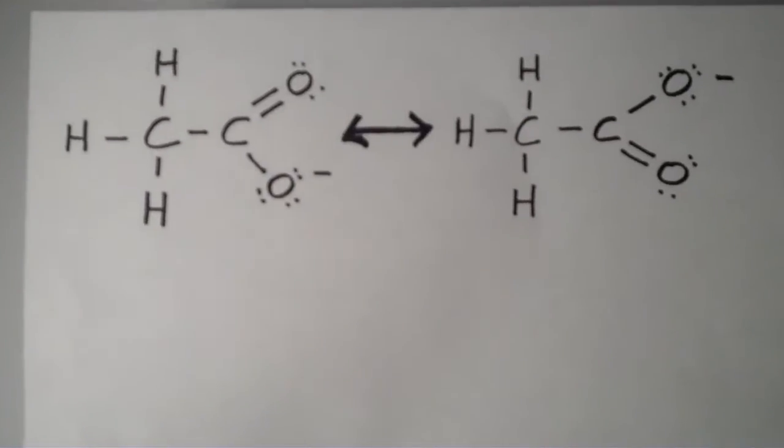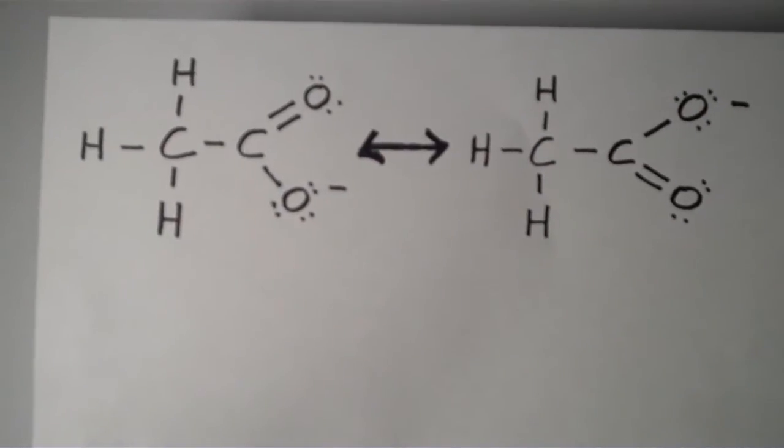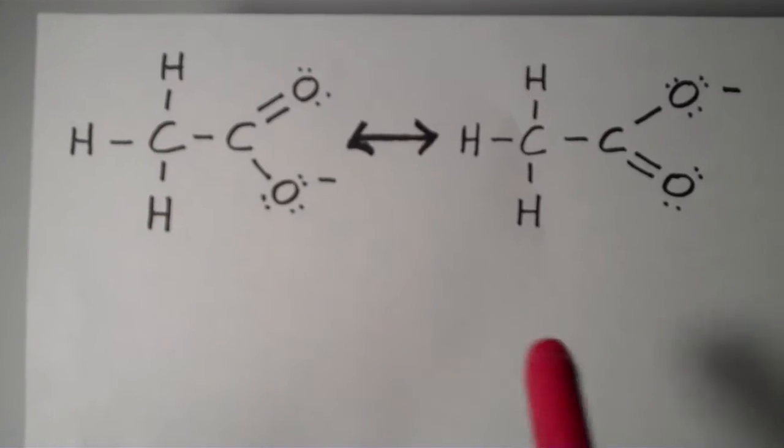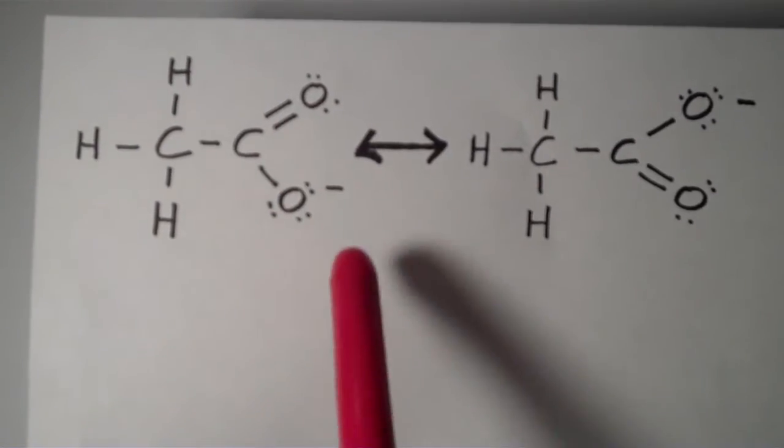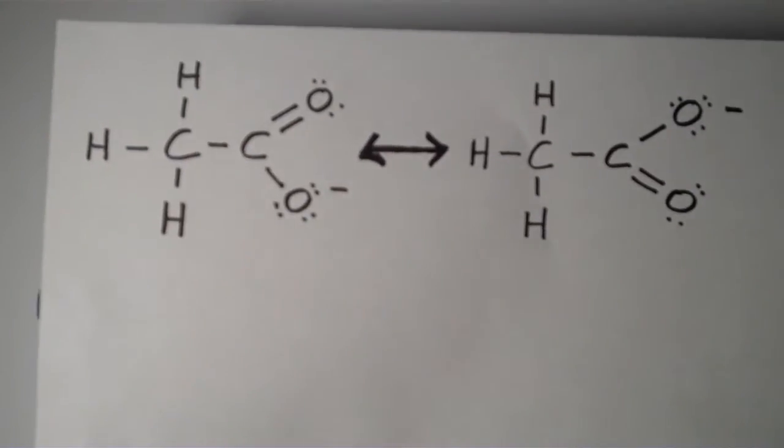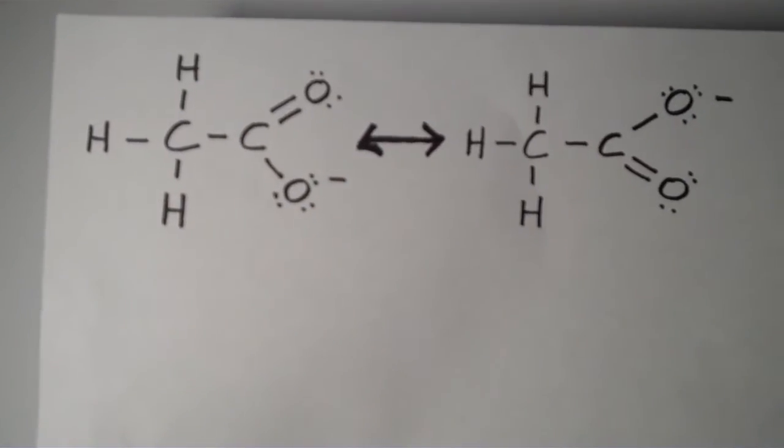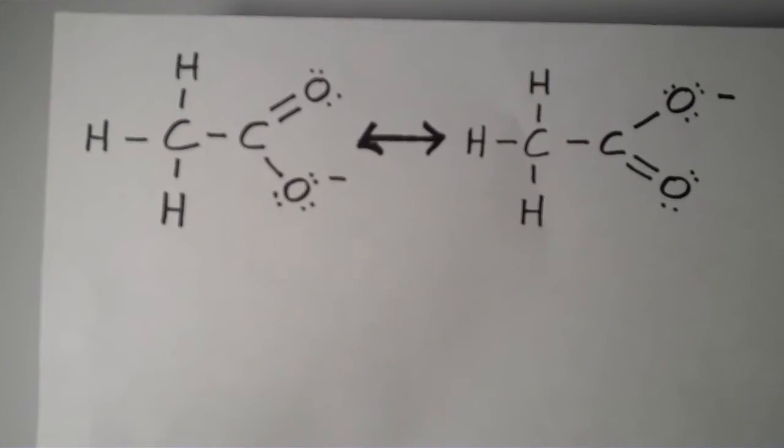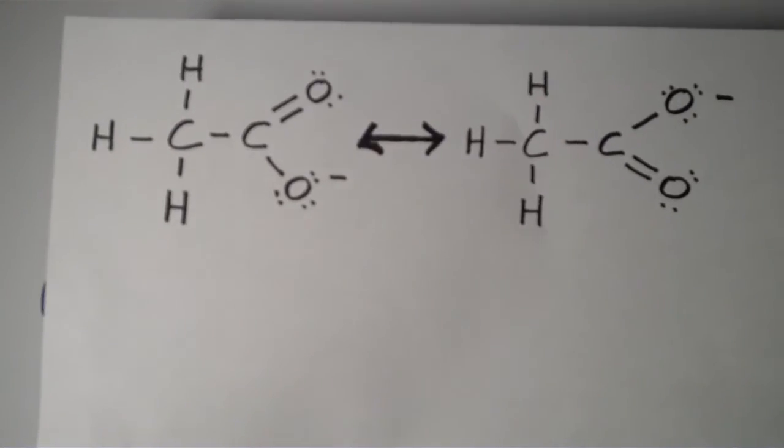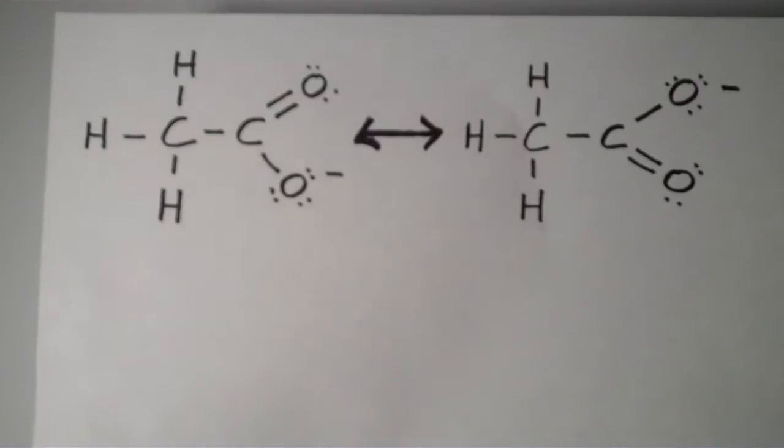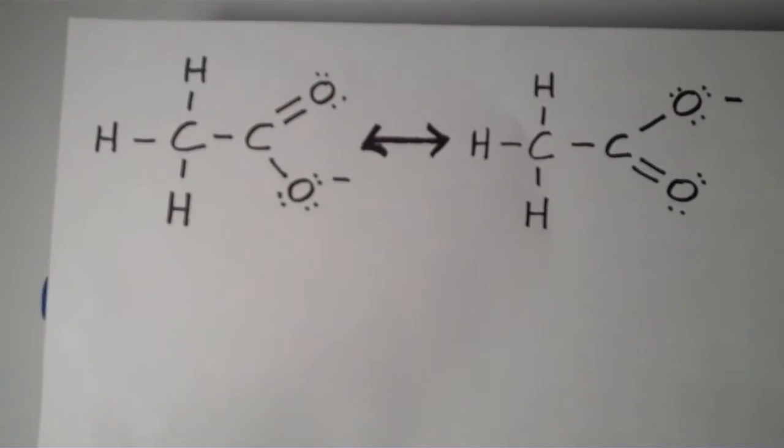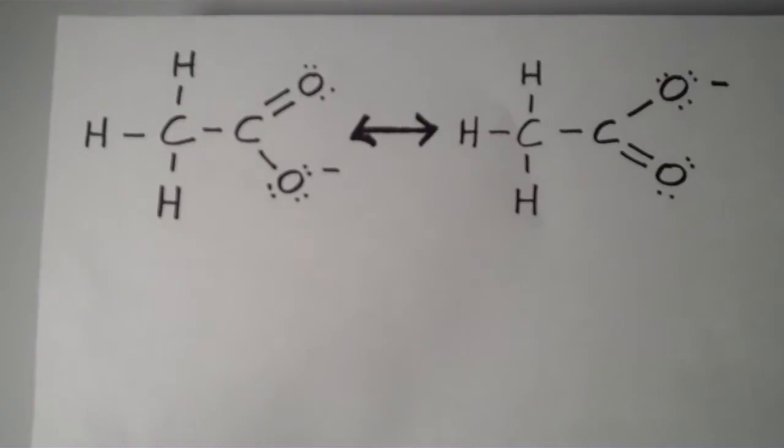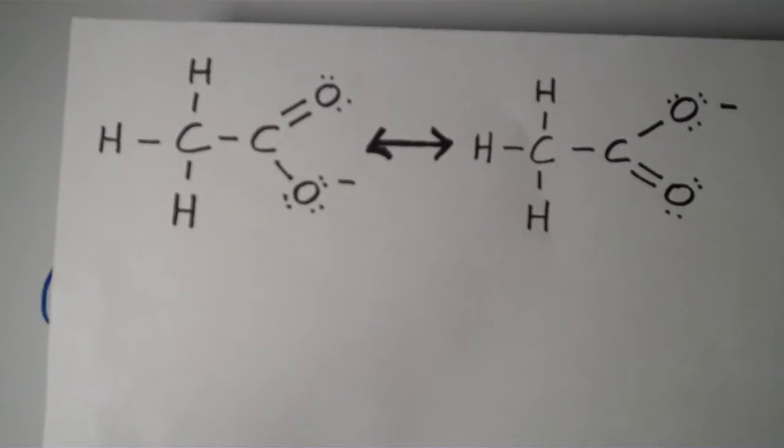The only thing about these structures that are different is there's a pi bond that has been switched, and there's also another pair of electrons, what we call a non-bonding pair, that has been switched, which gives the other oxygen a formal negative charge. So the two resonance forms differ only in the position of pi electrons and non-bonding electrons. That's the only difference between them.